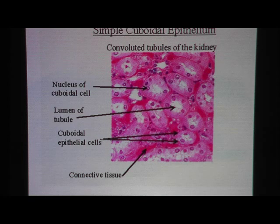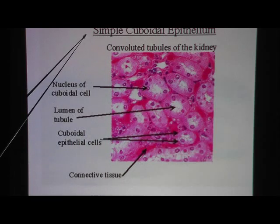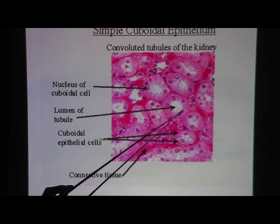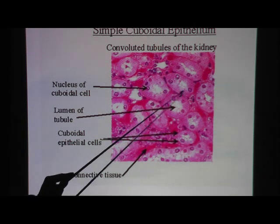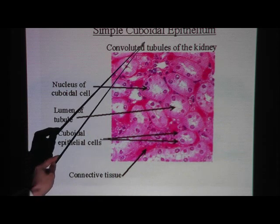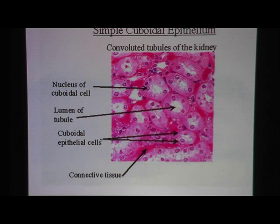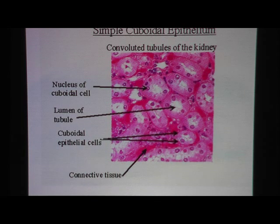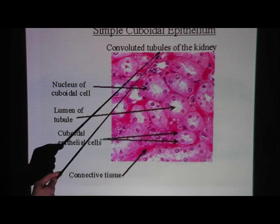Remember on the test or practicum: if the question asks to name this tissue, the answer is simple cuboidal epithelium. If the question asks to name this cell, the answer is cuboidal cell. If asked to name a structure, the answer can be nucleus, cytoplasm, or plasma membrane. If asked for one location, you can say tubules of the kidney.